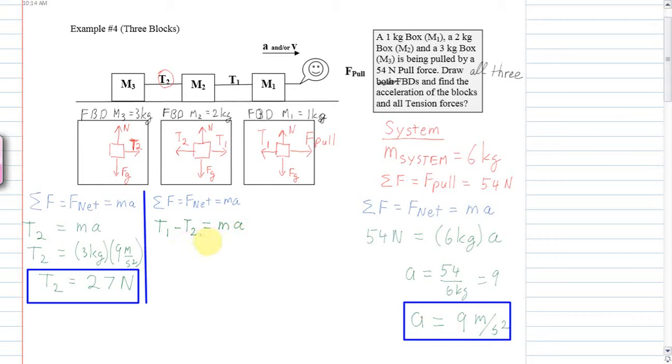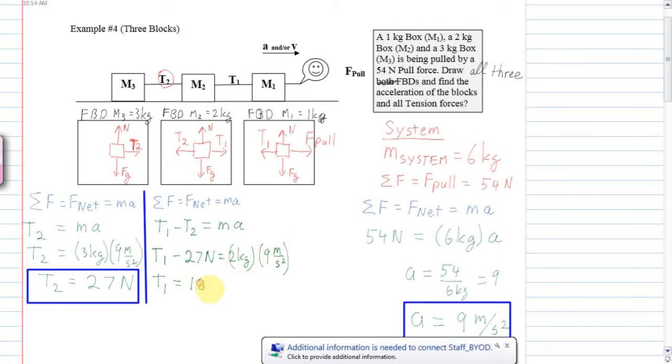We have just calculated T2, so we can now use that to calculate M1. So we'll continue on. T1 minus 27 newtons is equal to the mass, which is 2 kilograms, times the acceleration, which is 9 meters per second squared. So T1 equals 18 newtons plus 27 newtons. So T1 is equal to 45.